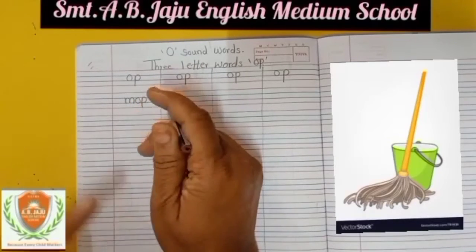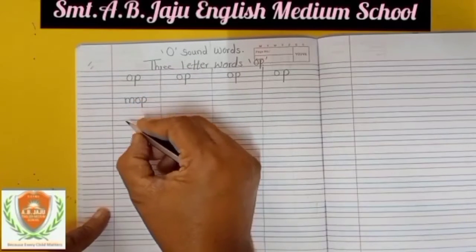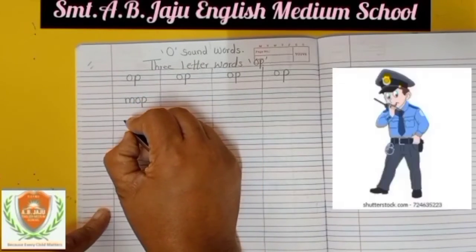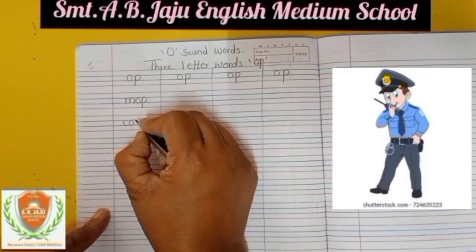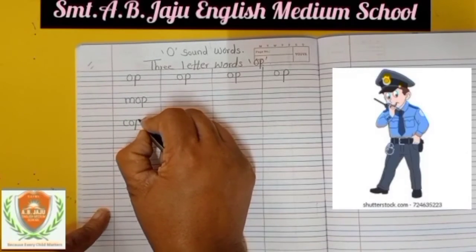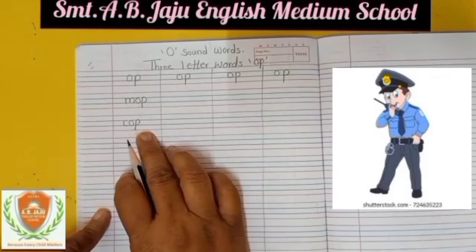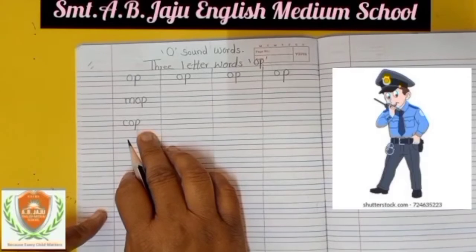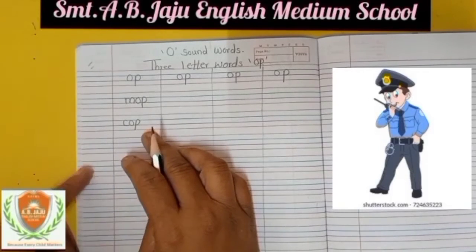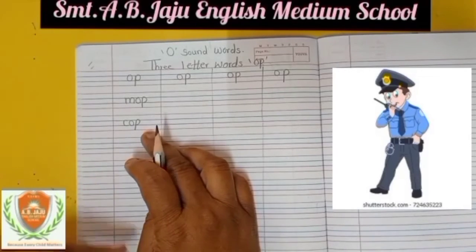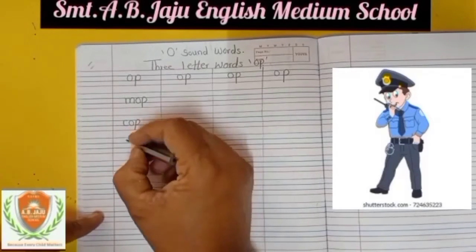See this picture. Sound of O is O, sound of P is P — Op. C-O-P, cop. Cop means police. See this picture.